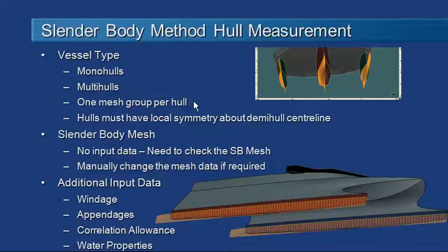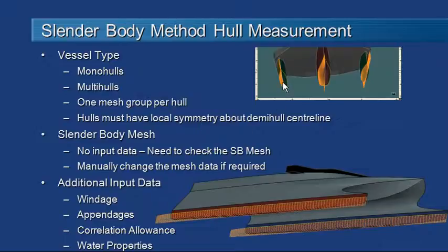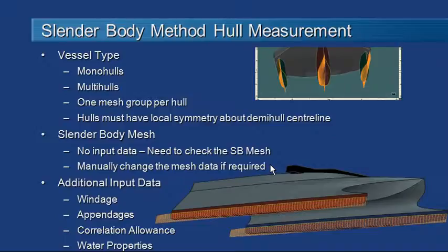Hull Speed automatically generates a mesh group on each hull. Here we have a trimaran with a mesh on the outside of the centre hull as well as a mesh on the outside of the demi-hulls. The only limitation is that those demi-hulls must have local symmetry. You can see the orange mesh is generated on just one side of each hull. That mesh is generated pretty much automatically, but you should check it after it's generated. There are a small number of manual changes you can make, but generally the automatic settings will be fine.